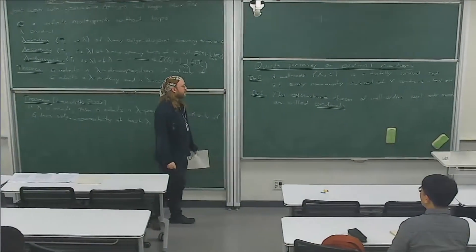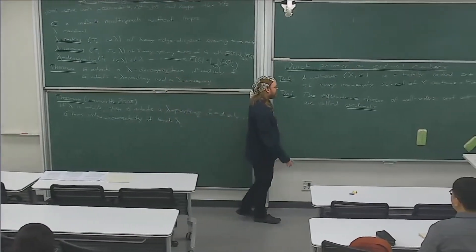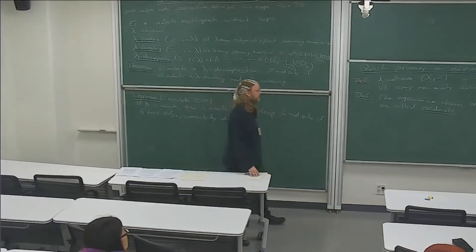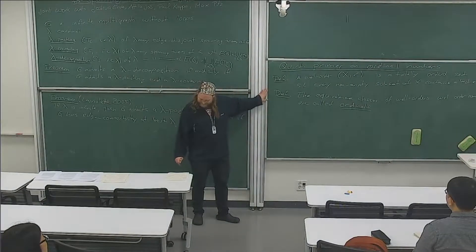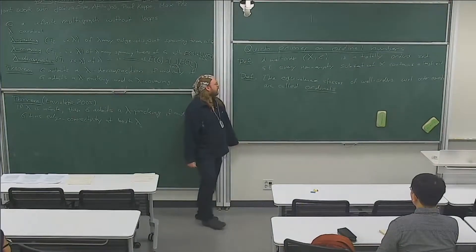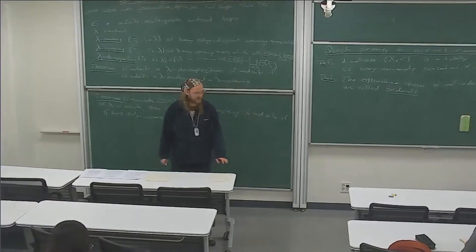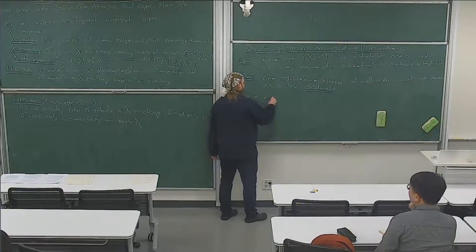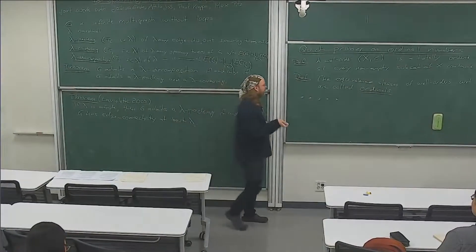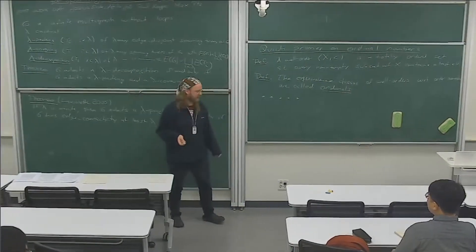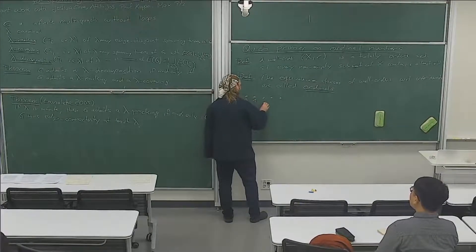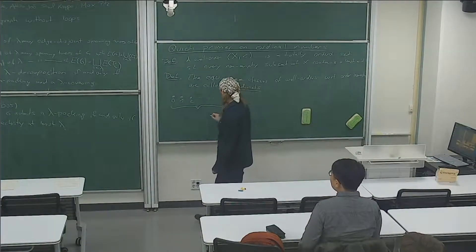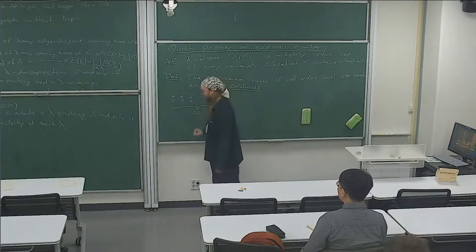Technically set theorists wouldn't define ordinals like this because these equivalence classes are proper classes, but for this talk we don't care. The natural numbers are well-ordered — every subset has a least element — and any finite total order is also a well-ordering. The set of natural numbers in the order context we often denote by omega. We can continue: if we put another element on top of all the natural numbers, we still have a well-order.